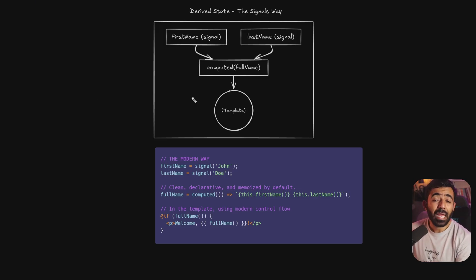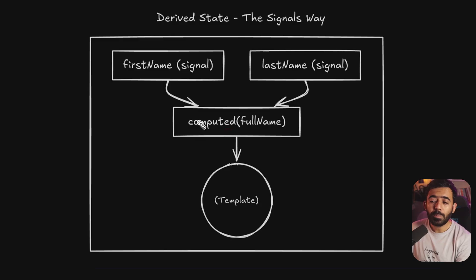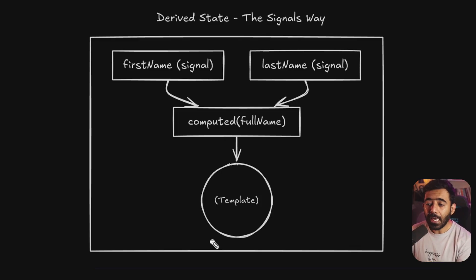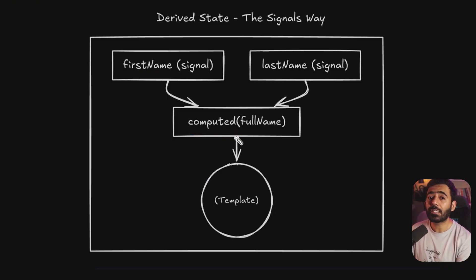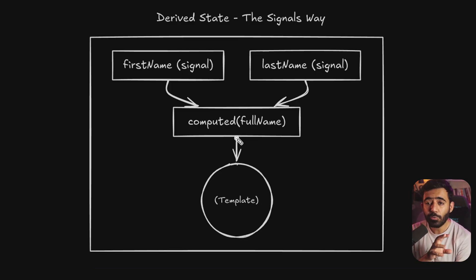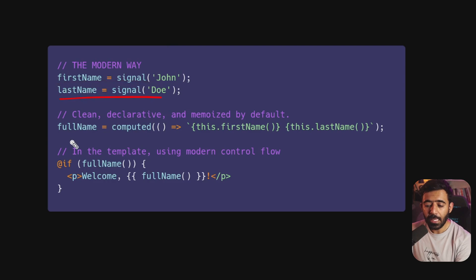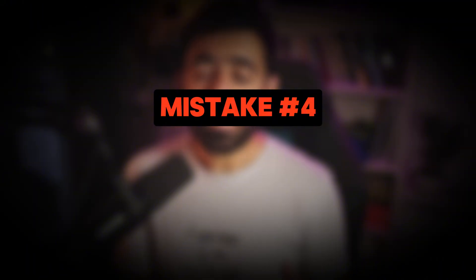A more modern and elegant solution is Angular Signals using `computed()`. It looks at other signals, and if any dependent signal changes, the computed value is recalculated and the template gets the new value. The beauty here is that unless a dependency changes, the computed value is cached — it won't recalculate unless and until the signals change. This results in efficient, declarative, more readable code that is efficient by design, all out of the box from Angular.